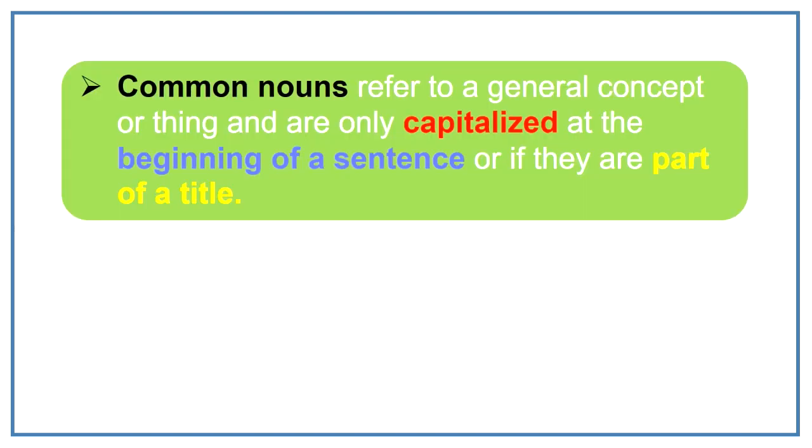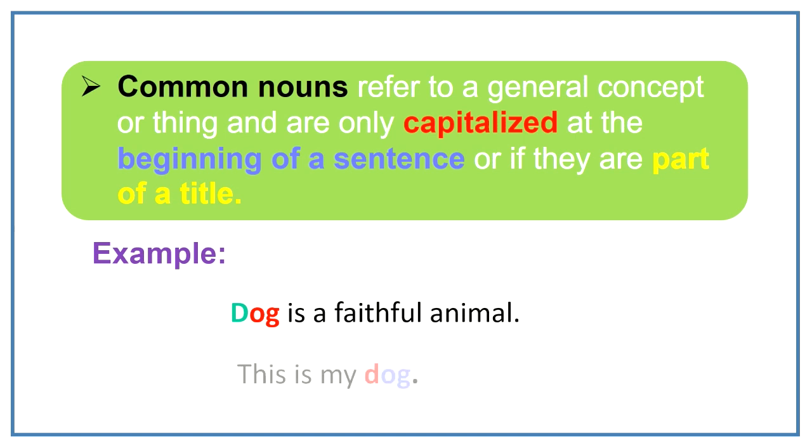Common nouns refer to a general concept or thing and are only capitalized at the beginning of a sentence or if they are part of a title. For example, dog is a faithful animal. This is my dog.